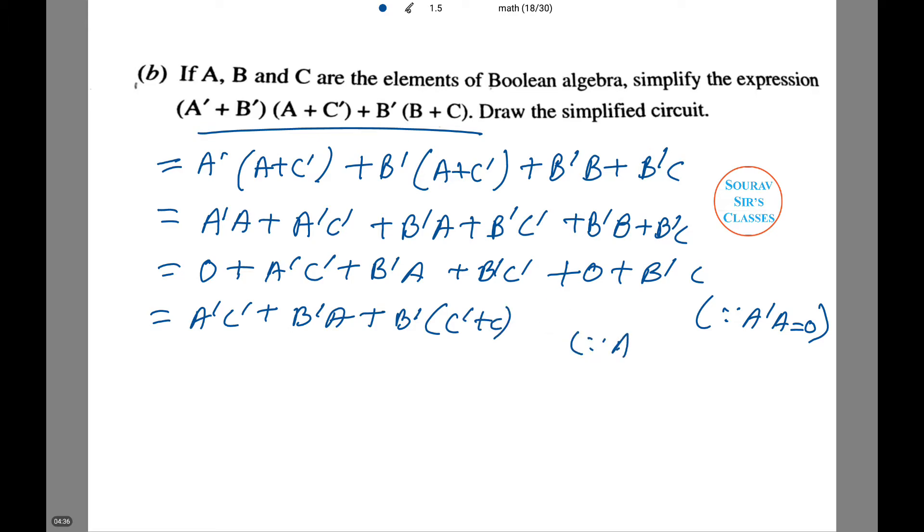This simplifies to A dash C dash plus B dash A plus B dash C. Now we can also factor out. A dash C dash plus A dash A plus C dash C dash. This gives us A dash C dash plus B dash.